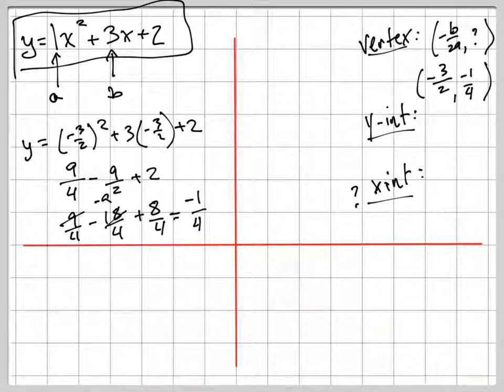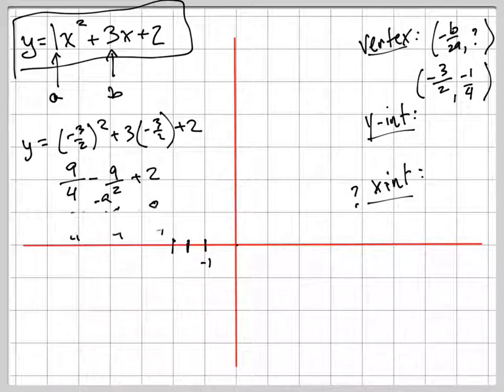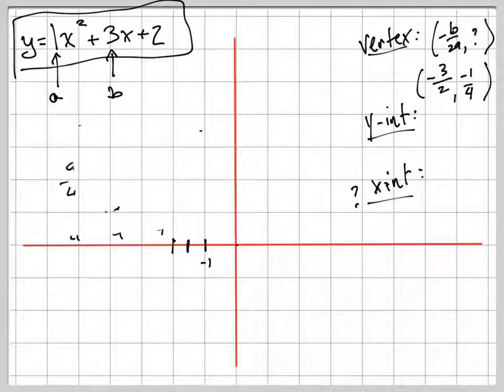So negative 3 halves. Negative 3 halves is right here. Let's say this is negative 1. So this is negative 2. So negative 3 halves is right there. And by the way, watch what I'm going to do here. Let me erase this first.